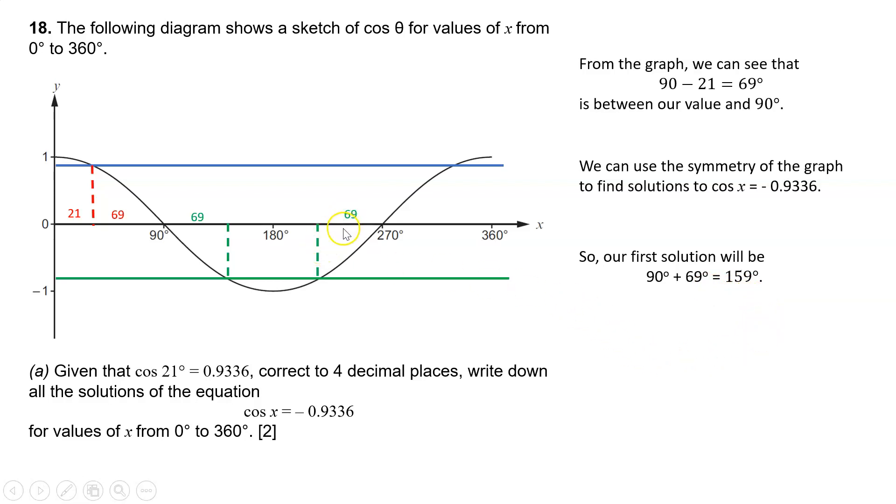Similarly now, over the far end, because we've got two values, the green line crosses the cos curve in two places. So we need to have a look, where else can I find a matching value? So we've got a 69 there. So our second solution is 270 minus the 69, which would be 201.